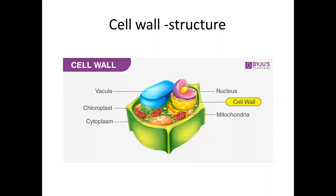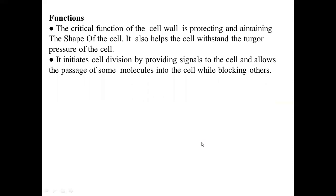The cell wall structure includes the nucleus, mitochondria, cytoplasm, chloroplasts and vacuoles. The critical function of the cell wall is protecting and maintaining the shape of the cells. It also helps the cell withstand turgor pressure, initiates cell division by providing signals, and allows the passage of some molecules into the cell while blocking others.